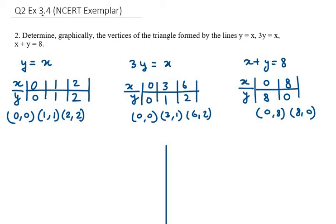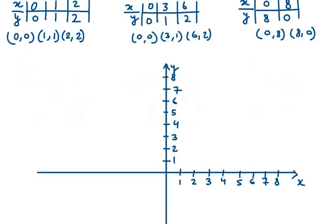Now we put these coordinates onto the graph paper. The first coordinate (0,0) lies at the origin, (1,1) is here, and (2,2) is here — joining them gives a straight line. For the second equation, (0,0) is again at the origin, (3,1) is here, and (6,2) is here. We join these to get the second line.